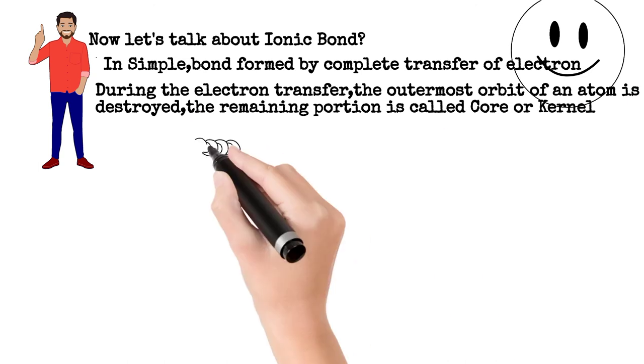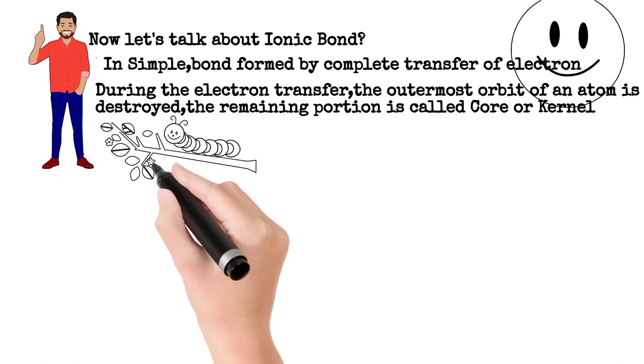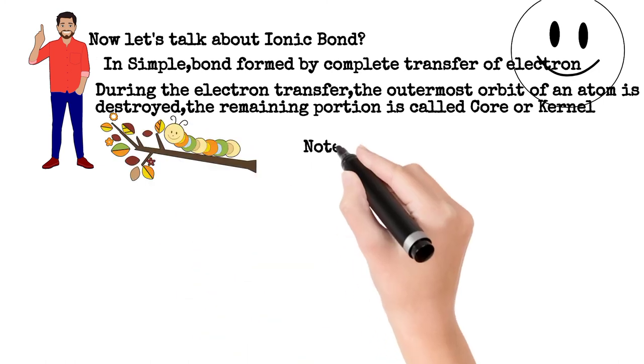During electron transfer, the outermost orbit of an atom which transfers the electron—the remaining portion is called the core or kernel of the atom.